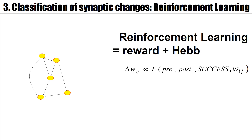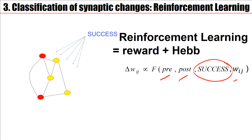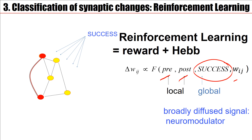Three-factor learning rules have a presynaptic part, a postsynaptic part, weight dependence, and in addition the success part. Pre and post together form a condition; in addition we need the success signal and then the weight will change. The two signals — pre and post — are local in the sense that they are synapse-specific; they pick out the synapse. Whereas the success signal is a broadly diffused broadcast signal.